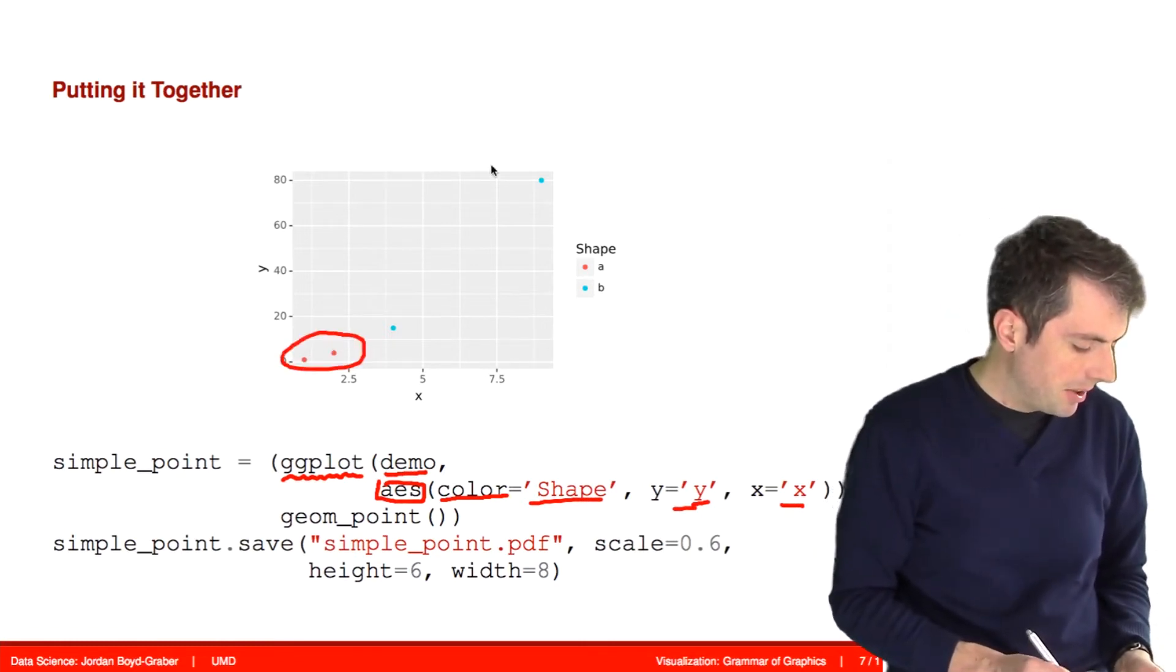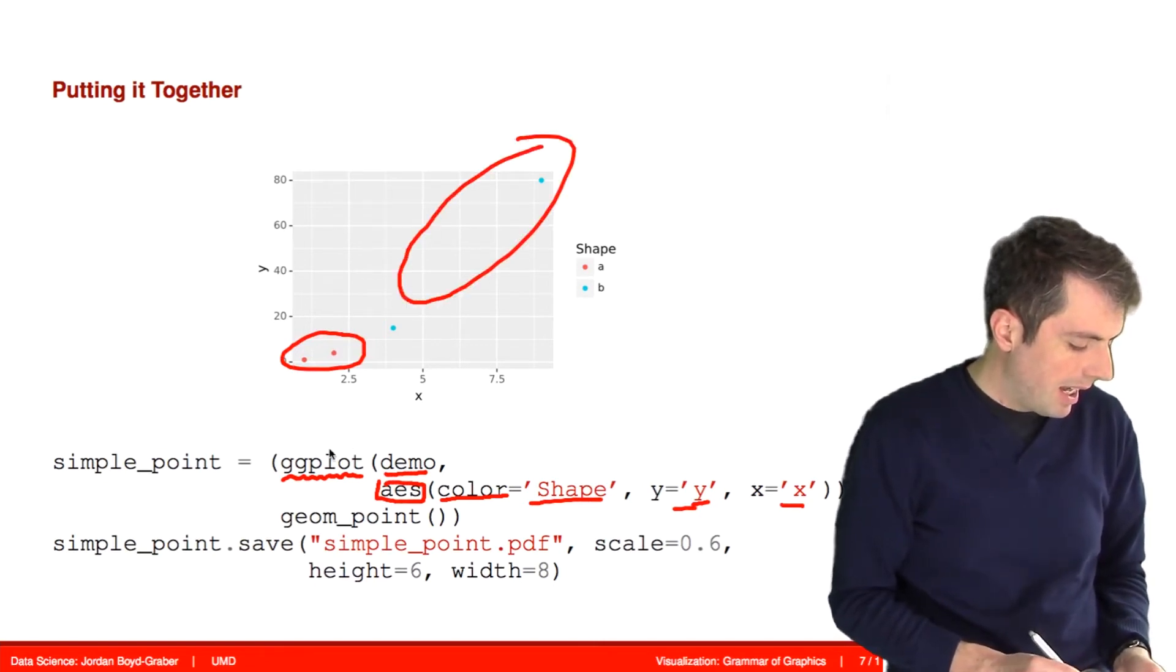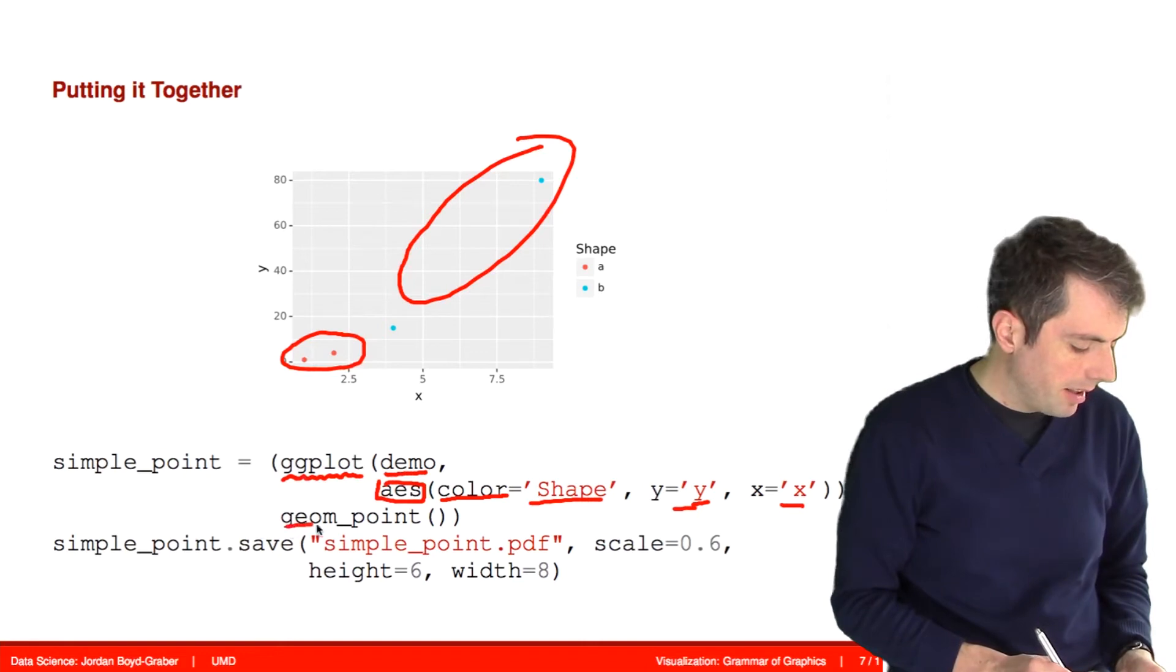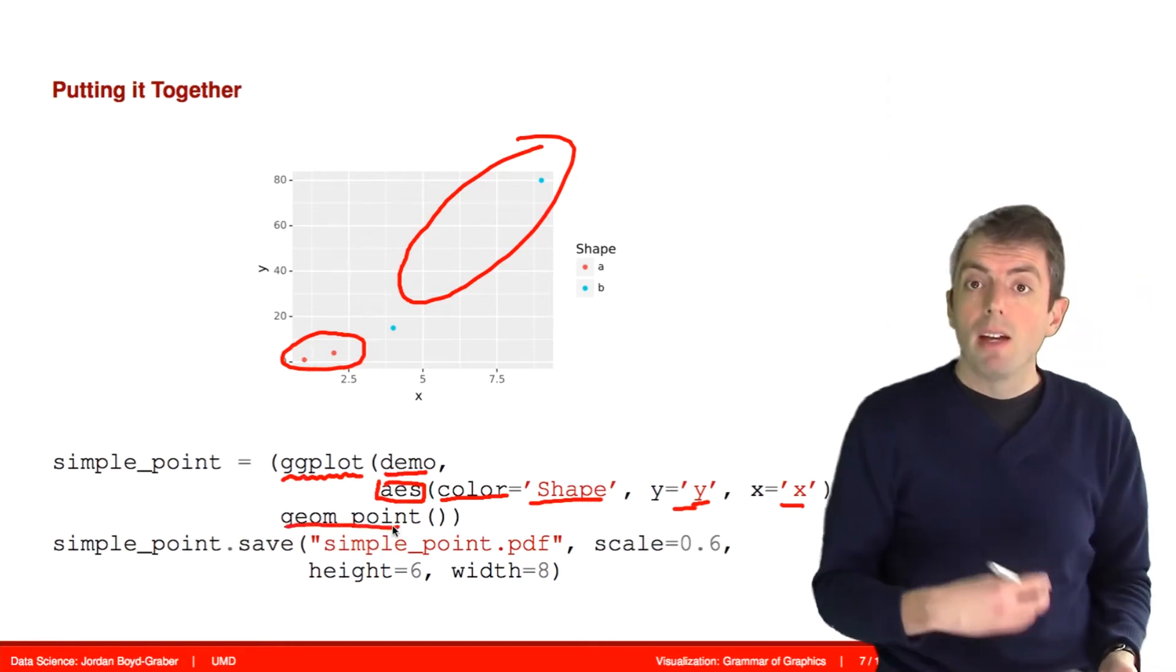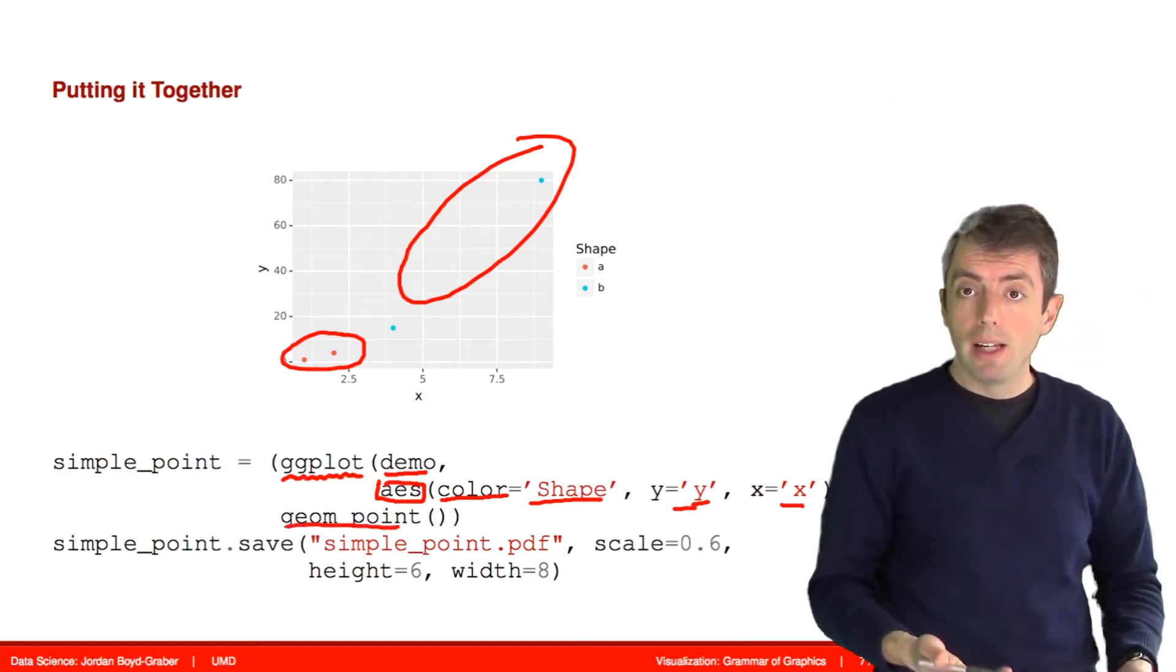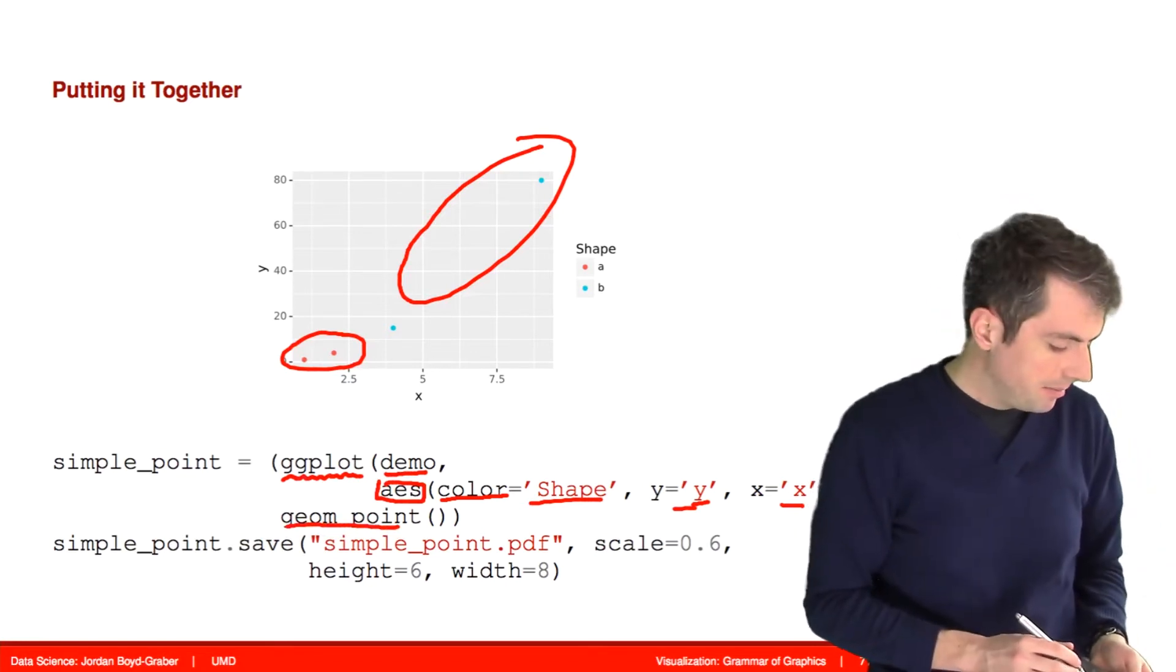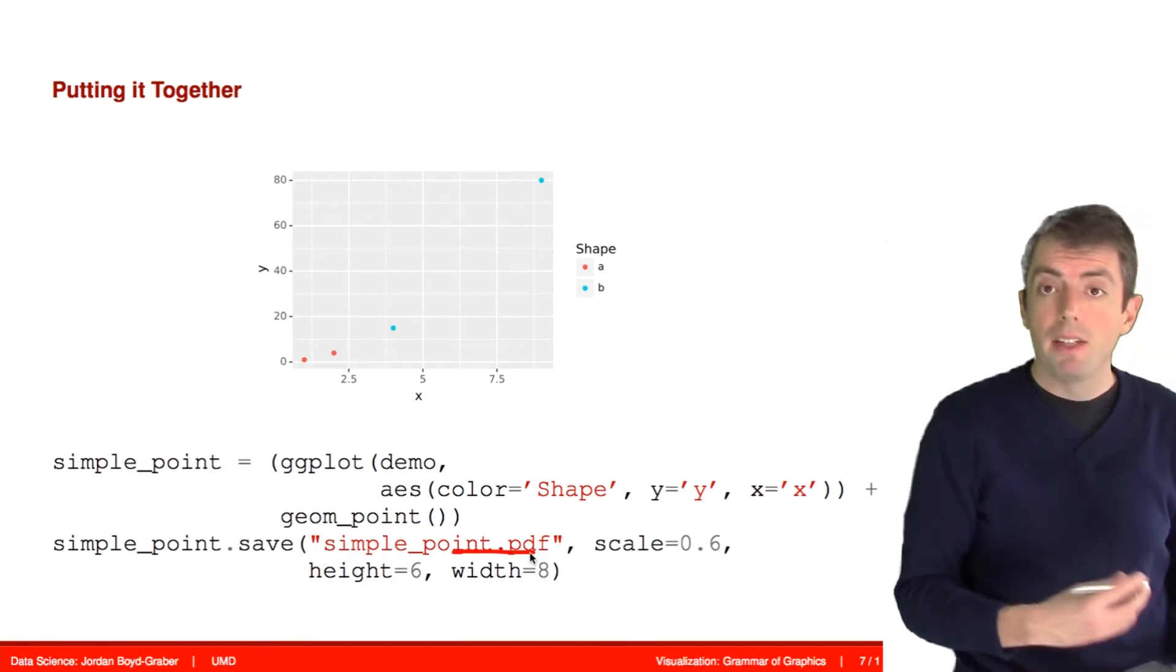The a shapes are down here, the b shapes are up here. We've also told it that we want these to be points. We want to plot these as points in a scatter plot.